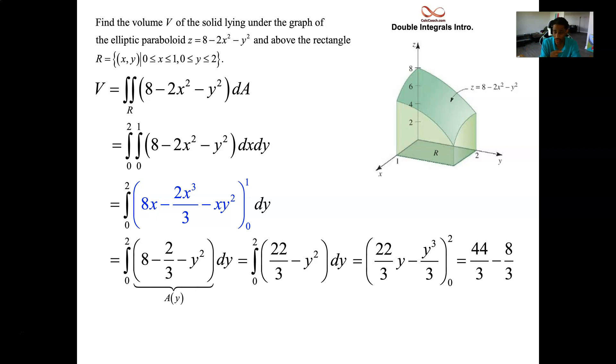The exact answer is 12. It is 36 over three. Our approximation was eight and a half. The exact answer was 12. So that's your first double integral that you perform. It's over a rectangular region, which makes things easier.